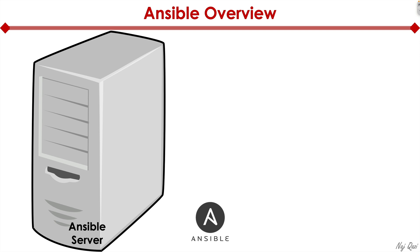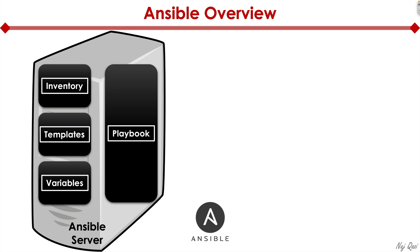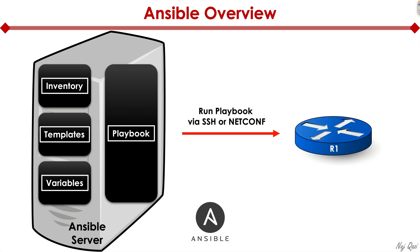Here's a visual view of what was explained so far. We have an Ansible server — it could be a VM or a container. We have an inventory file, templates, variables — all these files are a subset of the playbook. Then we run that playbook via SSH or netconf, log into the router or switch, and by running that playbook, we're pushing a certain configuration to that device.